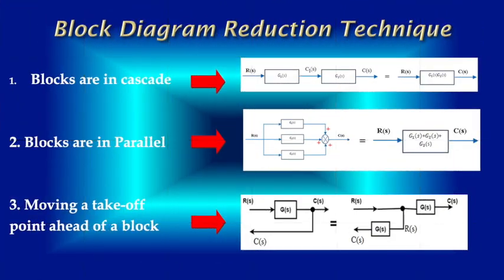Block Diagram Reduction Technique: When a number of blocks are connected, the overall transfer function can be obtained by block diagram reduction technique. Using this technique, complicated block diagrams can be simplified into simple open-loop forms. Some of the important rules are described here. When two or more blocks are in cascade, the resultant block is the product of the individual block transfer functions.